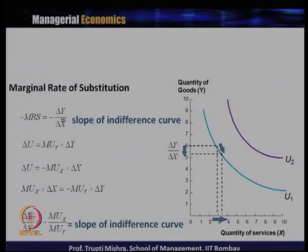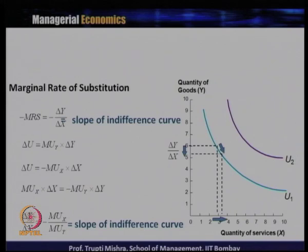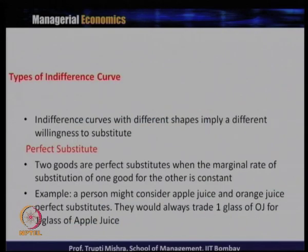The marginal rate of substitution also equals the ratio of the marginal utilities of X and Y. MRS is ΔY/ΔX, which is also the slope of the indifference curve. When X increases, Y decreases. The change in utility from a decrease in Y is MUy × ΔY, and the change in utility from an increase in X is MUx × ΔX. Setting MUx × ΔX = MUy × ΔY and simplifying gives ΔY/ΔX = MUx/MUy, which is both the slope of the indifference curve and the marginal rate of substitution.